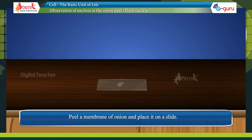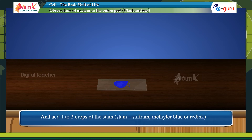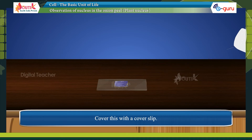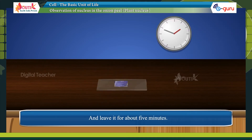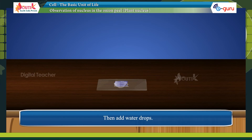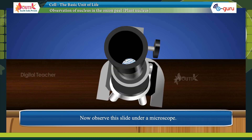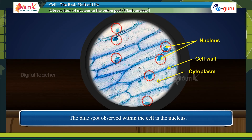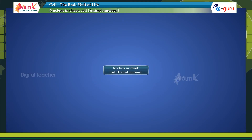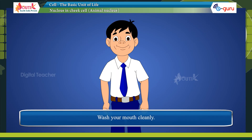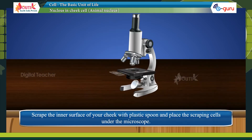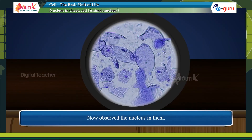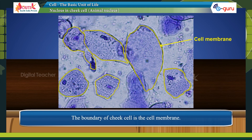Observation of the nucleus in onion peel: peel a membrane of onion, place it on a slide, and add one to two drops of stain. Cover with a coverslip and leave it for about five minutes. Then add water drops and observe the slide under the microscope. The blue spot observed within the cell is the nucleus. To observe the nucleus in a cheek cell, wash your mouth, scrape the inner surface of your cheek with a plastic spoon, and observe the scraping cells under the microscope.